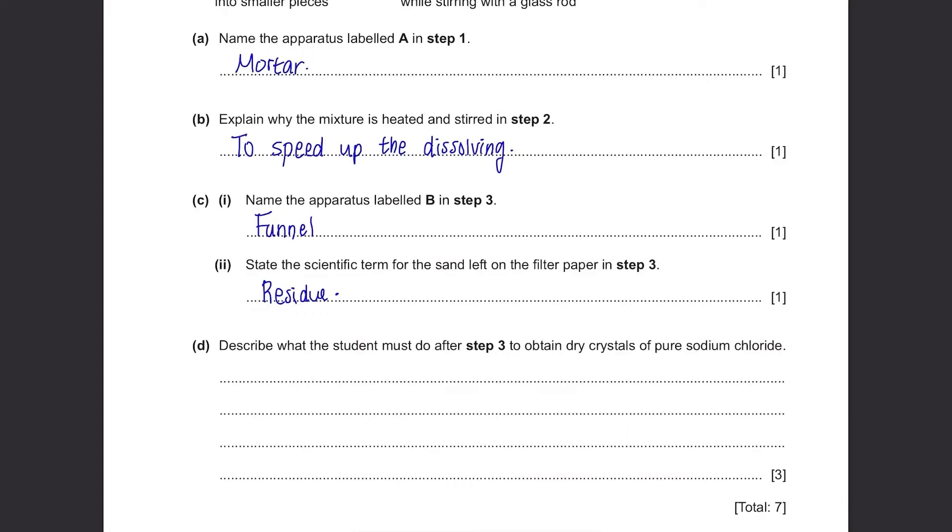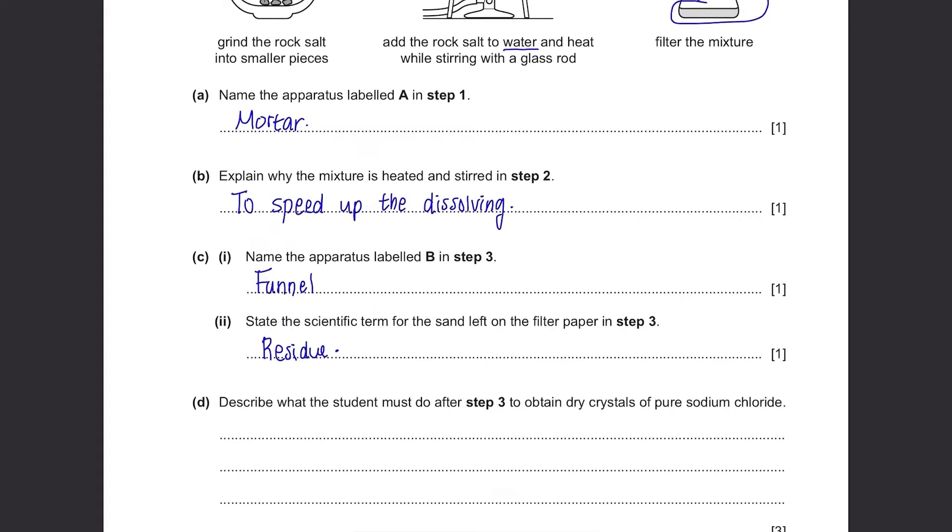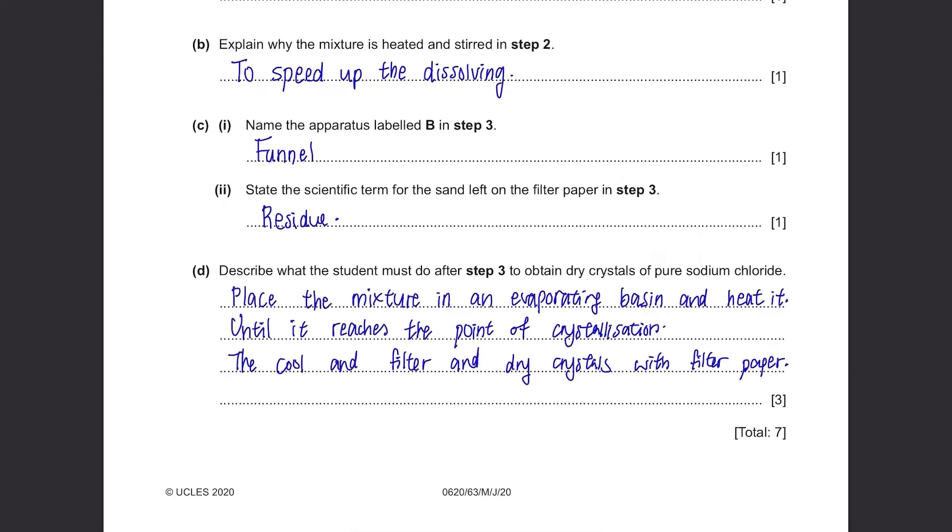Part D: Describe what the student must do after step 3 to obtain dry crystals of pure sodium chloride. In step 3, you got this mixture which is the mixture of water and sodium chloride. In order to get crystals of pure sodium chloride, you need to do crystallization. The process is you first put this mixture in an evaporating basin and start heating it. You can stop heating once you think that it's starting to crystallize. Then you cool it down and filter it one more time just to make sure that it's pure sodium chloride, and dry it with filter paper. This is the full process of crystallization and you have to memorize all the processes.